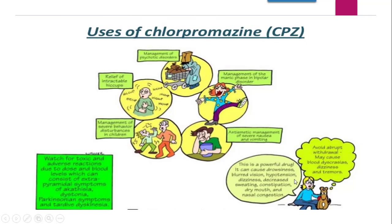To summarize pictorially the uses of Chlorpromazine: it is used for psychotic disorders; management of the manic phase or bipolar disorder (excitatory state); anti-emetic management of severe nausea and vomiting; and disturbances in children — attention deficit hyperactivity disorder.